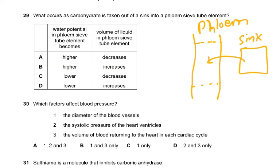Question 29. What occurs as carbohydrate is taken out of a sink and into a phloem sieve tube element? The answer is D. As sucrose enters the phloem, the water potential in the phloem will become lower, and water will follow. So the volume will increase — the volume of liquid in the phloem sieve will increase. Sucrose is the molecule from the sink — starch is never in the phloem. When sucrose moves in, the water potential decreases, water follows, volume of liquid will increase. So the answer is D.